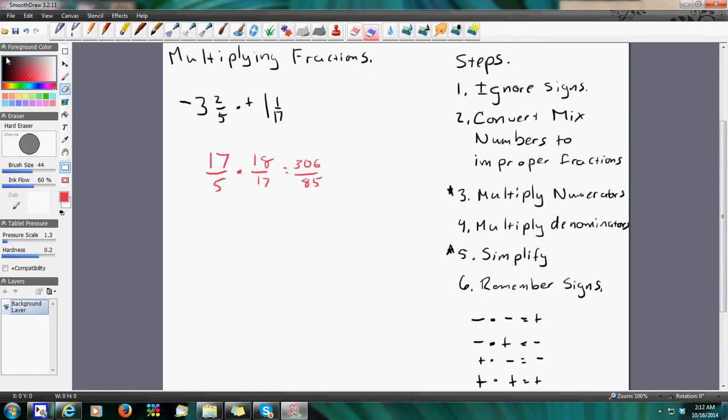And then what I do is I'm going to simplify. And oddly enough, I know that 17 goes into both of these. And I know that 17 goes into this by 8 over 5. I say simplify and write as a mixed number. So this is going to be 3, because 5 goes into 18 three times, with a remainder of 3, so it's 3 out of 5.